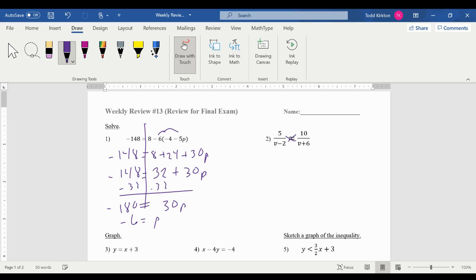Number 2 is a proportion. We're going to cross multiply. I would suggest taking this little extra step just to make sure you don't forget to distribute both sides.